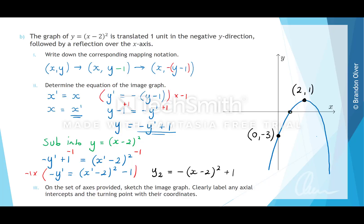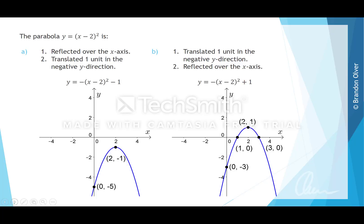This graph also has x-intercepts: the first at (1, 0) and the second at (3, 0). So that is the transformed graph. On this slide, a computer has generated both of those graphs, and you can see that the same transformations are occurring but in different orders. That results in two different rules and two different graphs as shown on screen.